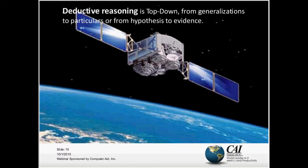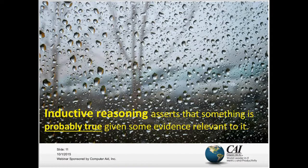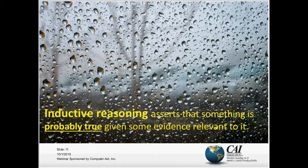This next type of reasoning is called inductive reasoning, and it's a little more sophisticated. It asserts that something is probably true given some evidence relevant to it. For example, if you see water on a window and can't see what's going on in your backyard, you might say it's possibly raining. So again, it says something is probably true given evidence relevant to it.